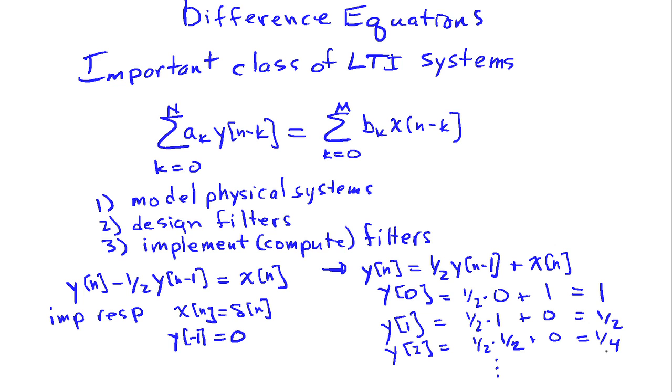And then what happens to the impulse response is it never really dies out. It decays as 1 half to some power. So if I were going to do a convolution, I'd need to have an infinite number of terms, but this difference equation actually allows me to do the computation recursively in a very, very simple manner. I just have to multiply 1 half times the previous output plus the input. So they're very useful for implementing filters.